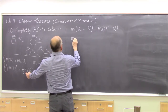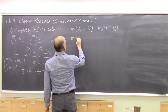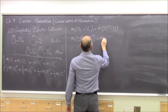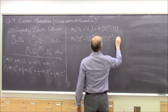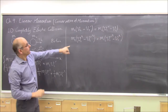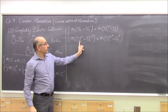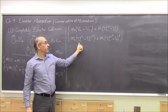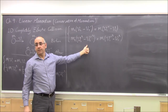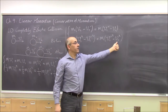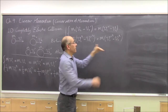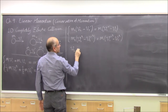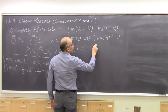Now apply the difference-of-squares identity: V2 squared minus V2 prime squared equals (V2 minus V2 prime)(V2 plus V2 prime), and similarly V1 prime squared minus V1 squared equals (V1 prime minus V1)(V1 prime plus V1). If we divide the energy equation by the momentum equation, the common factors cancel and we get the simple relation: V2 plus V2 prime equals V1 prime plus V1.